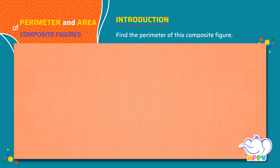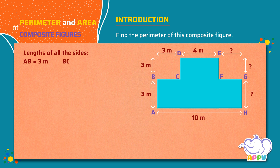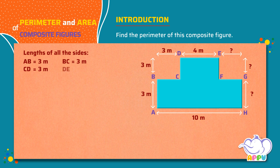To find the perimeter, we need to find the total length of the sides of the shape. Let's find the length of all the sides: AB equals 3 meters, BC equals 3 meters, CD equals 3 meters, DE equals 4 meters.